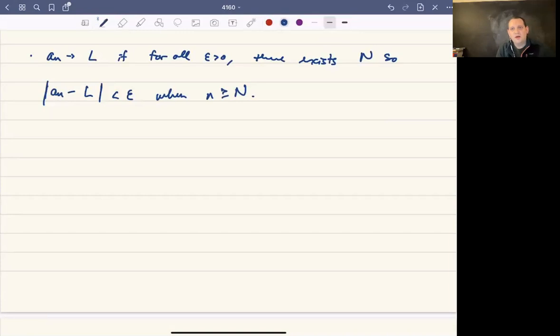Now if no such L exists, then we say that the sequence a_n diverges. There are really two types of divergence that I want to emphasize.